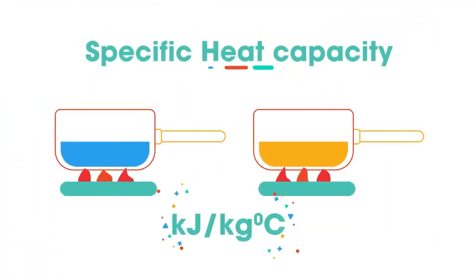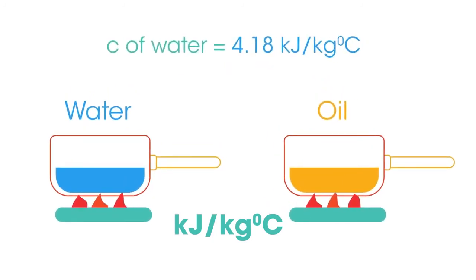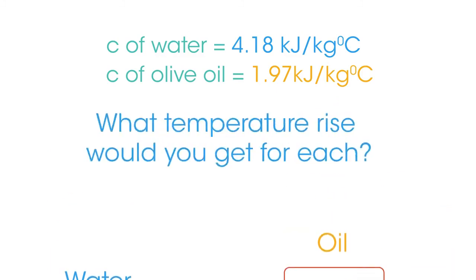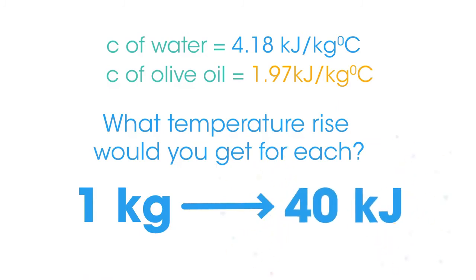Different materials have their own specific heat capacity, and this has consequences in our everyday life that we may not be aware of. Most of us probably cook with water more often than we do with oil. Imagine heating pans of water and oil over identical heat sources. The specific heat capacity of water is 4.18 kJ/kg/°C, and the specific heat capacity of olive oil is 1.97 kJ/kg/°C. What temperature rise would you get for each if 1 kilogram of each had 40 kilojoules of energy transferred?